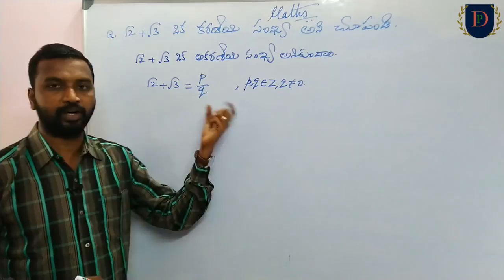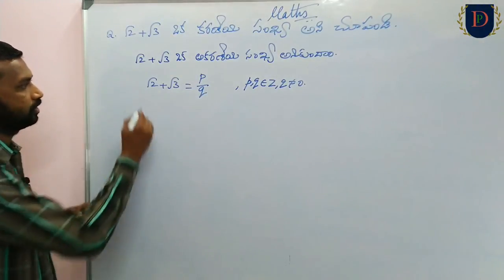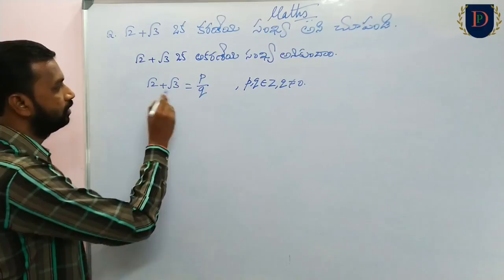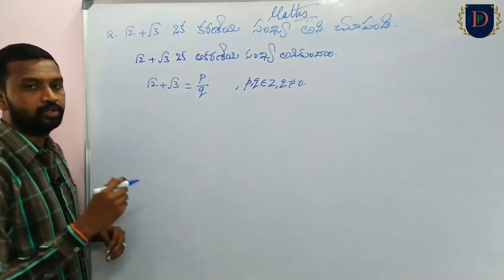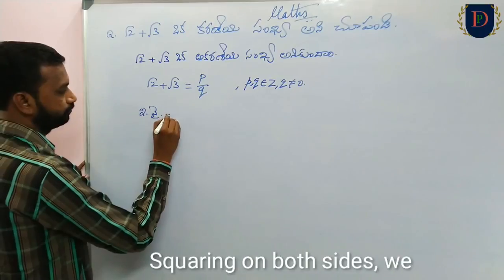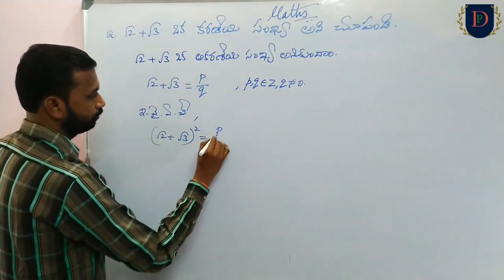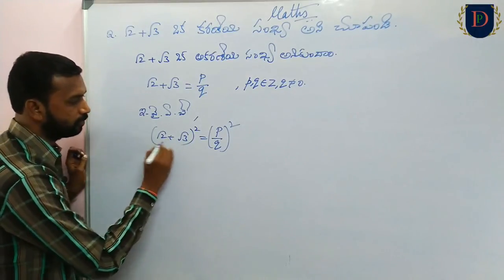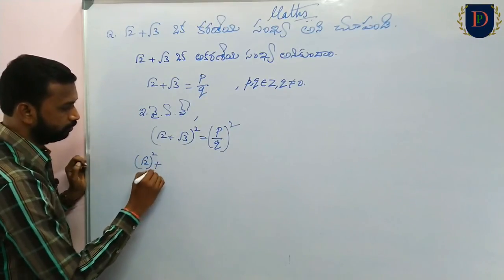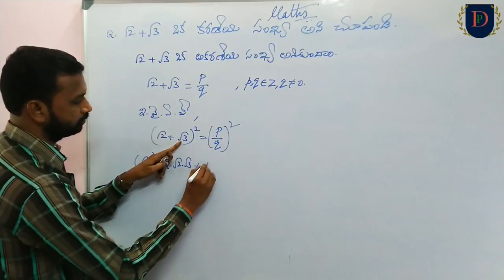Root 2 plus root 3 is equal to p by q. If we arrive at a contradiction, then to proceed we square both sides. Root 2 plus root 3 whole square is equal to p by q whole square. Using the formula (a+b)² = a² + 2ab + b², we expand the left side: a squared plus 2ab plus b squared equals p squared by q squared.